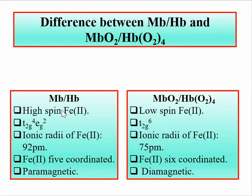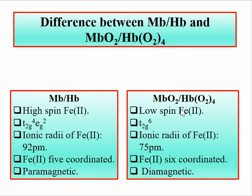In the case of myoglobin or hemoglobin deoxyforms, the iron center is a high spin center. In the case of oxymyoglobin and oxyhemoglobin, the iron center in the heme is a low spin center.